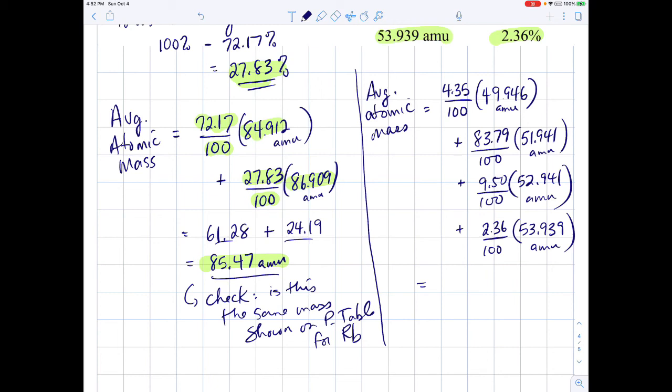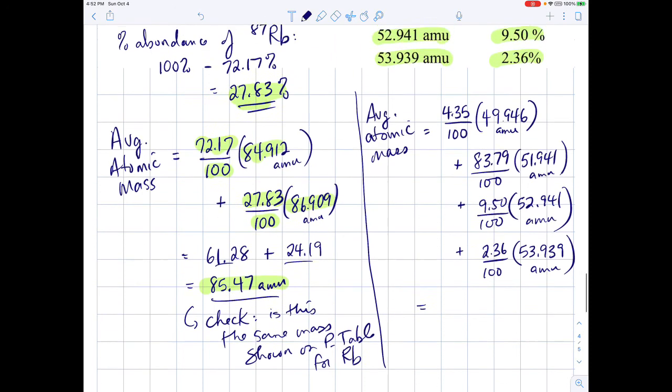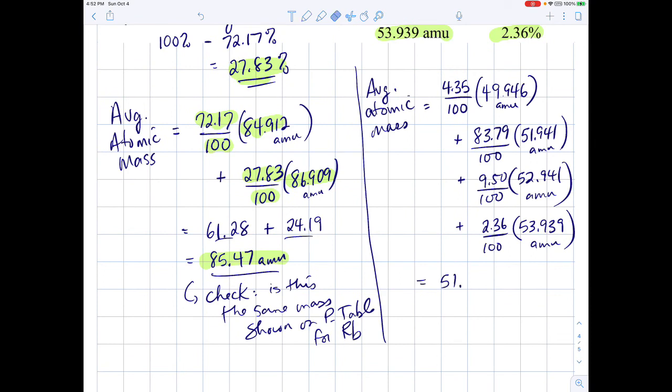All right, now last time I showed my intermediate multiplications and then I added together to get the answer. This time I'll just do it all in one step on my calculator. So 4.35 divided by 100 multiplied by 49.946 plus 83.79 divided by 100 times 51.941 plus 9.5 divided by 100 times 52.941 plus the last guy, 2.36 divided by 100 times 53.939 equals. And my calculator gives me an answer of 51.996. I'm going to round that off to two decimals like we did before. And we're going to get 52.00 AMUs is the average atomic mass for chromium.